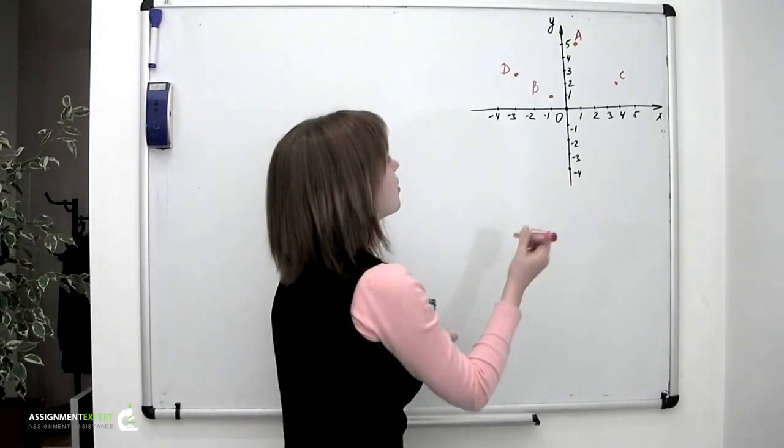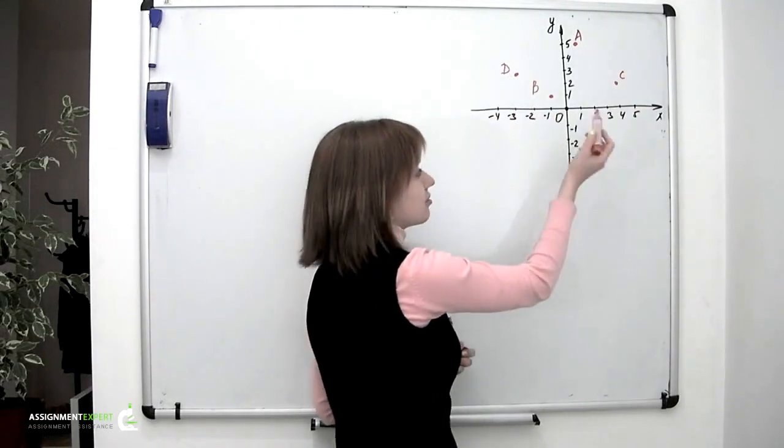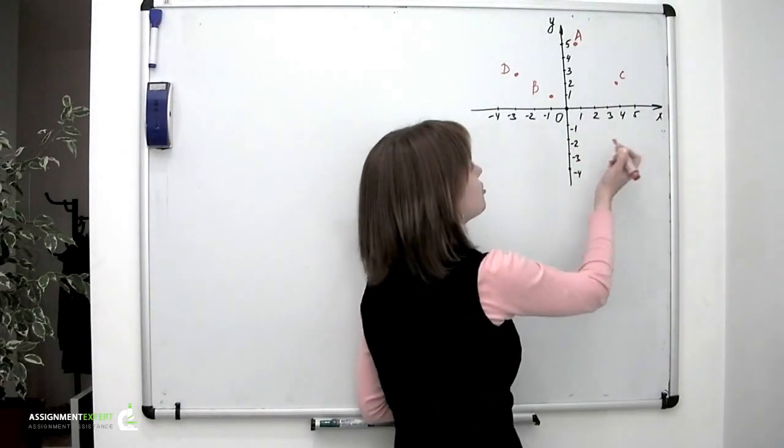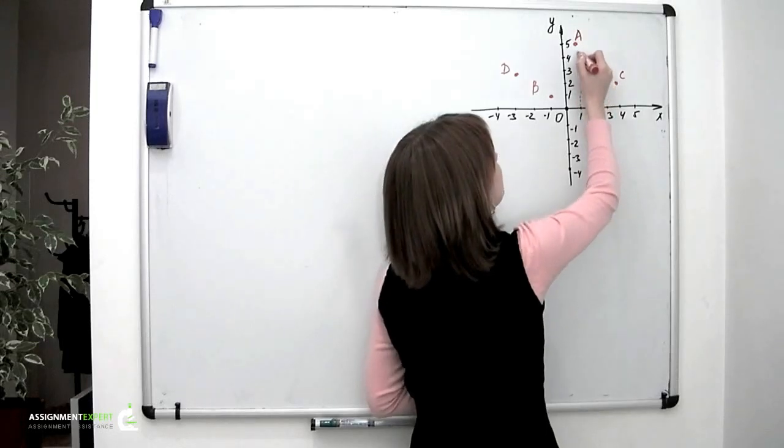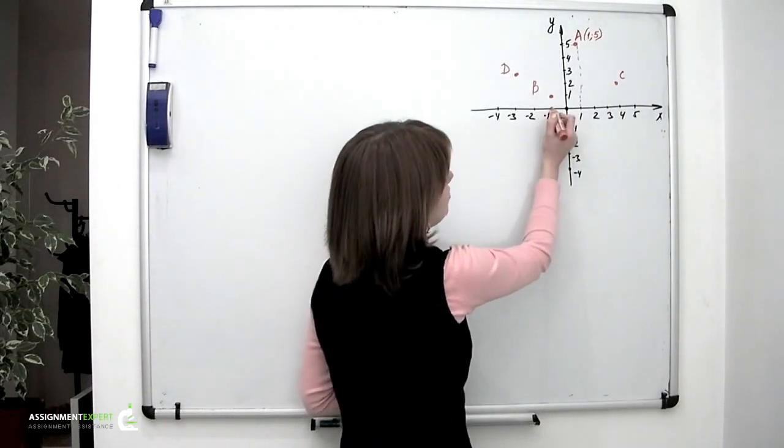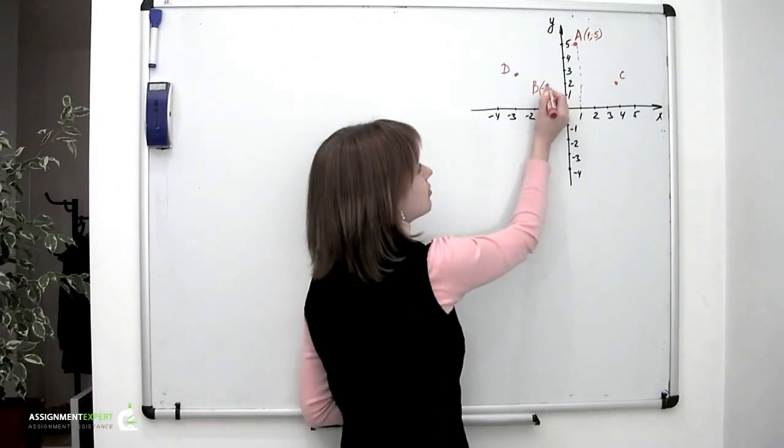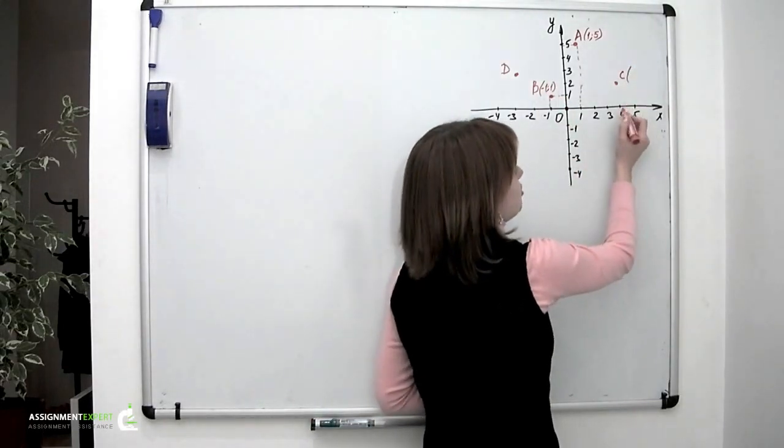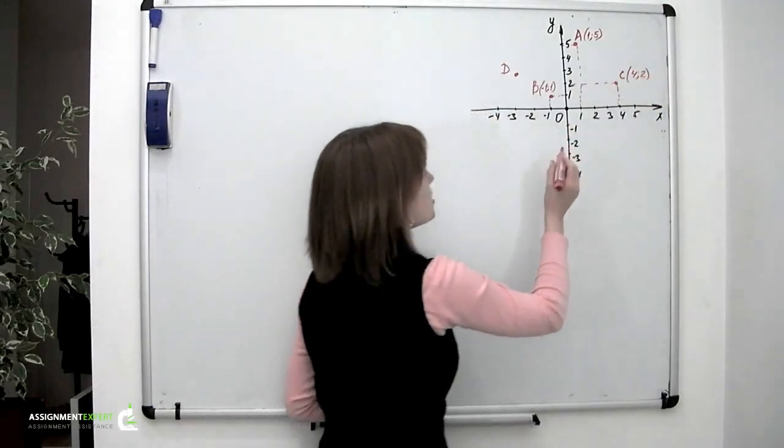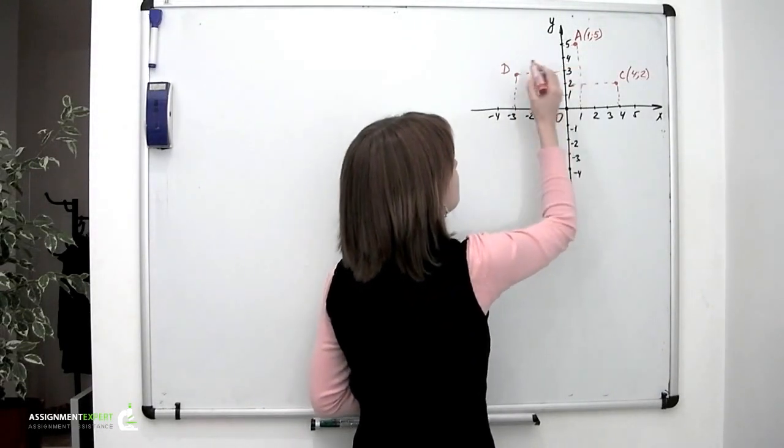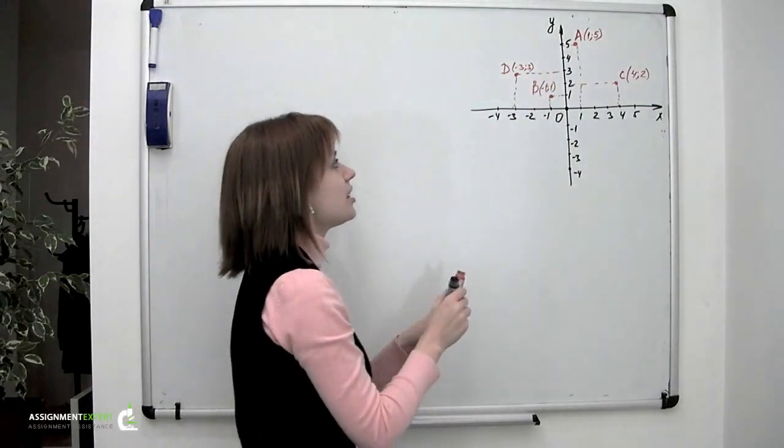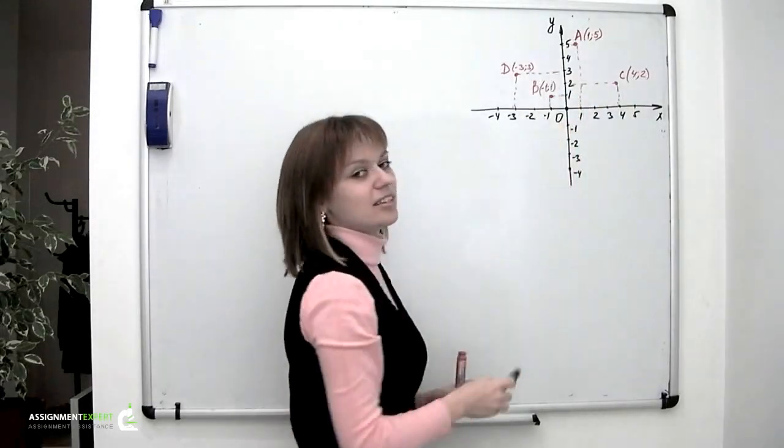Let's have a look. We have four points already graphed on the plane and let's try and find their coordinates. Point A has coordinates 1 and 5. Point B has coordinates minus 1 and 1. C has coordinates 4 and 2, and D has coordinates minus 3 and 3. As you can see, the first number in pairs stands for the x-coordinate and the second stands for y.